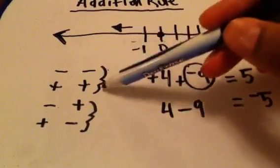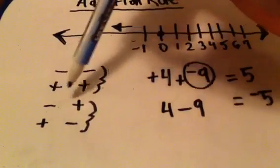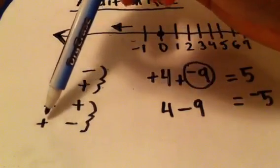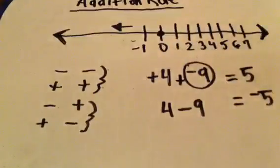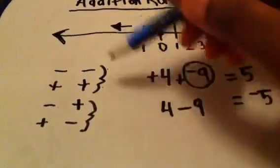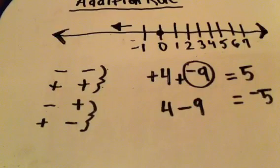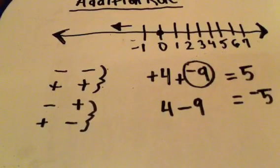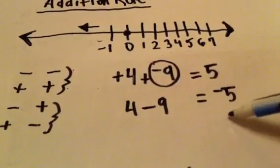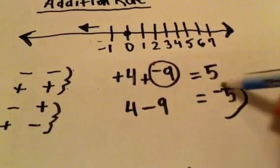There are four different types of number combinations: two negative numbers, two positive numbers, one where the first is negative and the second is positive, or where the first is positive and the second is negative. But there are two main rules. When they have like signs, you add the numbers and take the sign that both numbers share. When they have different signs, you subtract the smaller from the larger, and your answer carries the sign of the larger number.